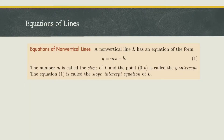Here we have the definition of the equation of non-vertical lines. It's really saying the non-vertical line L has an equation of the form y equals mx plus b, which I think we've heard of before. The number m represents the slope — how steep the line is — and the point zero comma b is called the y-intercept, so where does it intercept the y-axis? We'll refer to this as the slope-intercept equation, because it gives us the slope and the intercept of the line.